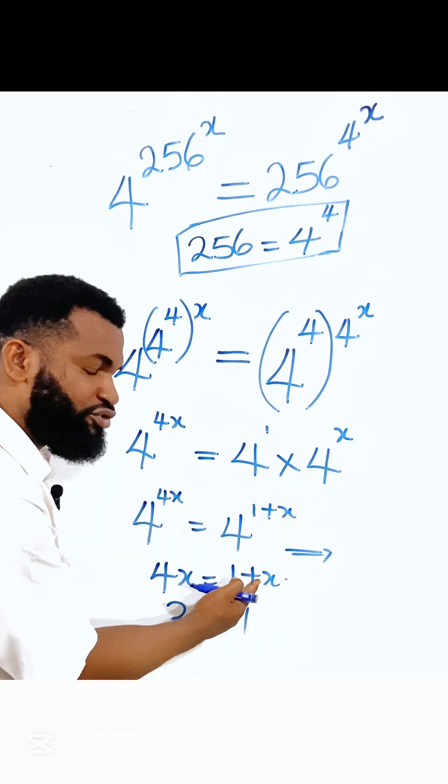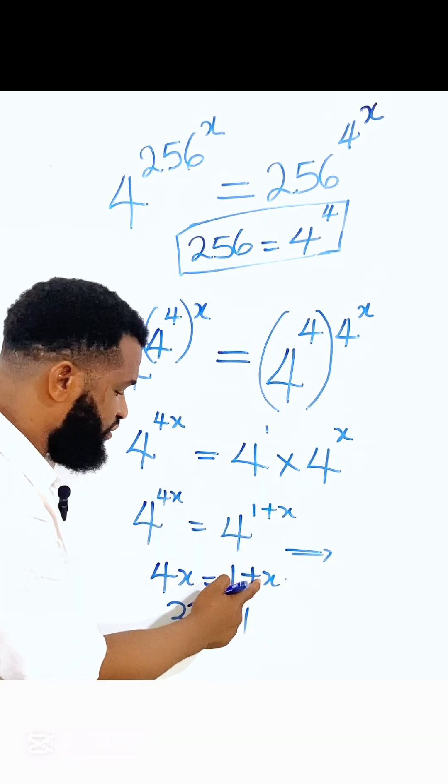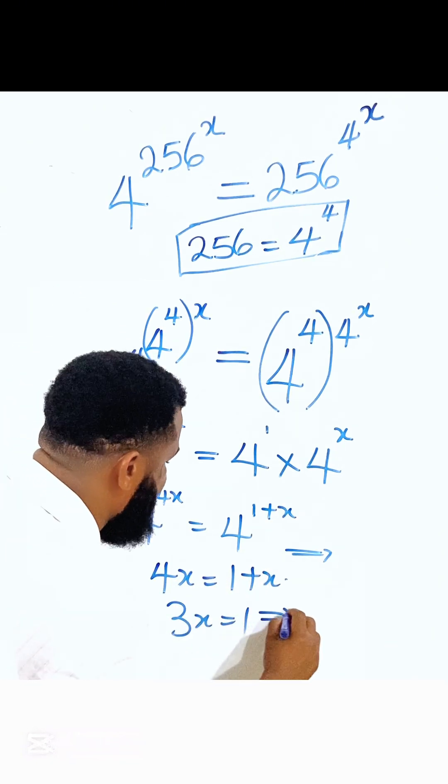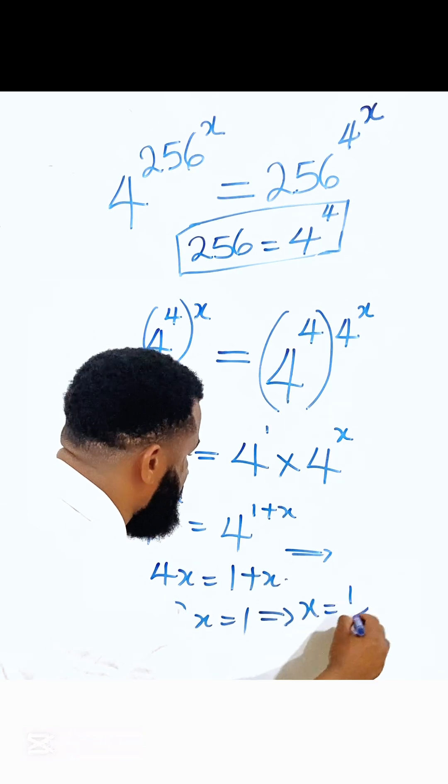What I mean is, subtracting x from both sides of the equation, I'm going to have 4 minus x is 3, equal to 1. This implies that x is equal to 1 over 3.